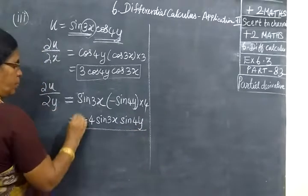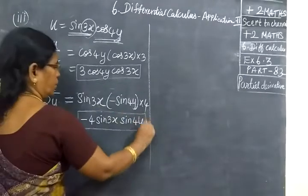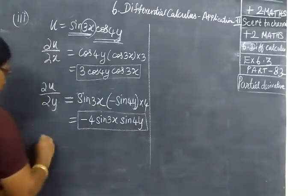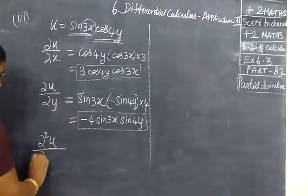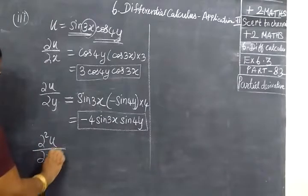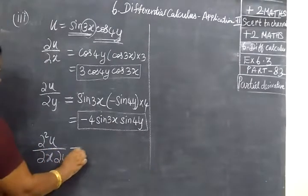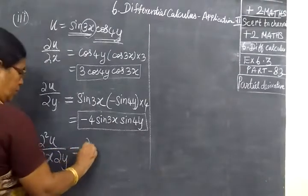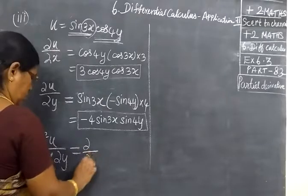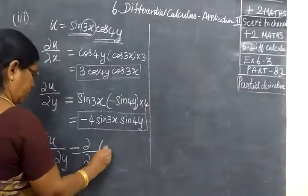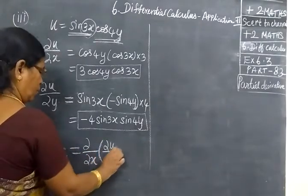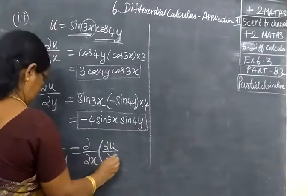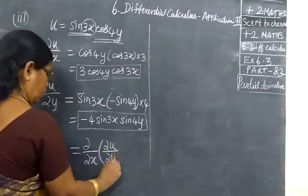So ∂u/∂y equals minus 4 sin(3s) sin(4y). This is the result. Next we are finding ∂²u/∂s∂y, equal to d/∂y of ∂u/∂s.